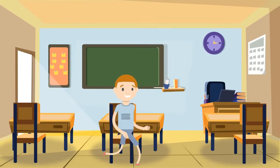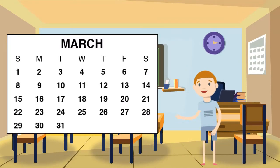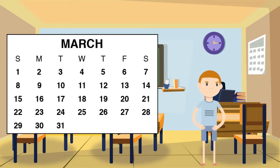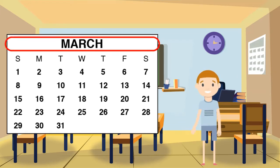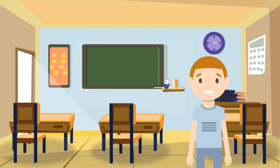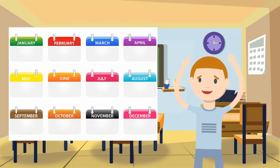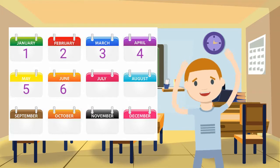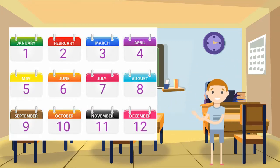A calendar is a chart like this. Most calendars show one month at a time. The month is usually shown at the very top. Do you know how many months are in one year? Yes, there are 12 months in one year. Please say all 12 months of the year with me as I read them out loud.